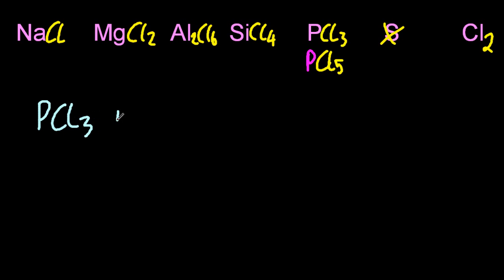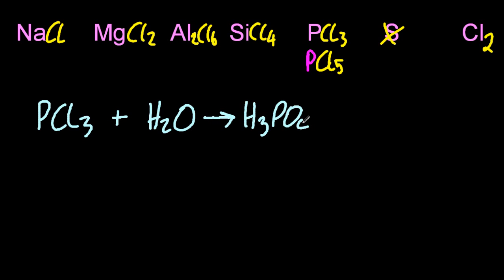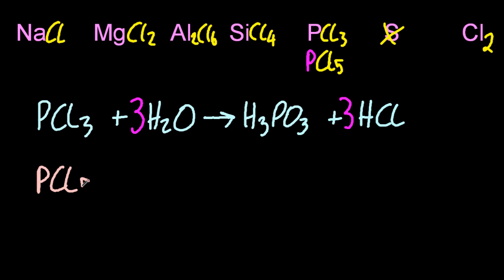Phosphorus — let's look at the trichloride first. It makes H₃PO₃ — that's not phosphoric acid, that's phosphorous acid — and hydrochloric acid, so that's going to be acidic.